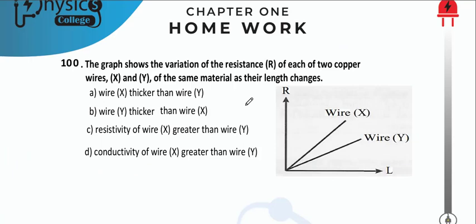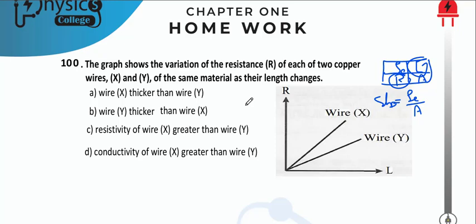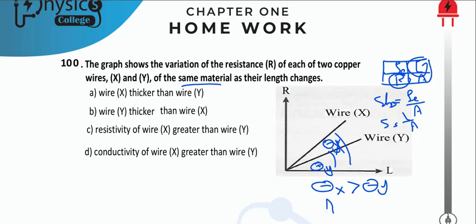A graph of resistance R vs. length L for two copper wires X and Y (same material). Slope = ρ/A. Since ρ is constant, slope ∝ 1/area. θ_X > θ_Y means slope_X > slope_Y, so area_X < area_Y — wire Y is thicker. Resistivity and conductivity are the same for both since they are the same material.